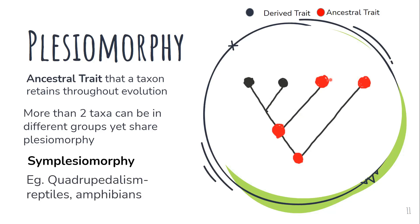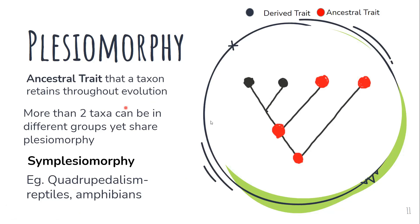A very good example of symplesiomorphic is quadrupedalism — walking on four legs — seen in both reptiles and amphibians. This is an ancestral trait that has been passed on from one generation to another. One important thing to understand is that plesiomorphic characters will be found way down in the phylogenetic tree, because it's an ancestral trait and a common feature of all, so it must be at the bottom to be passed on to the next generations.